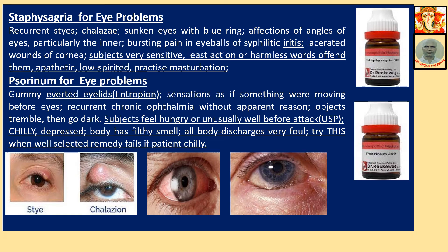Staphysagria for eye problems: recurrent styes on the lids. Chalazion is the inflammation of the internal (Meibomian) gland beneath the upper eyelid surface. Sunken eyes with blue rings; affections of the angles of the eyes, particularly the inner angle. Bursting pain in eyeballs of scrofulous iritis — inflammation of the iris. Lacerated wounds of the cornea. Subject is very sensitive; the least action or harmless word offends them; apathetic, low-spirited. History of masturbation helps individualize this case for Staphysagria.